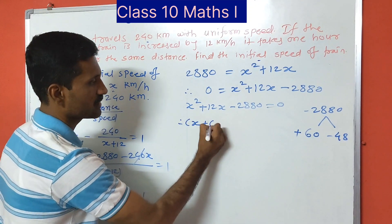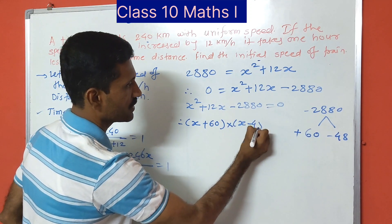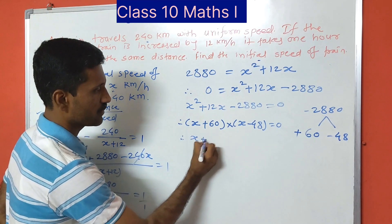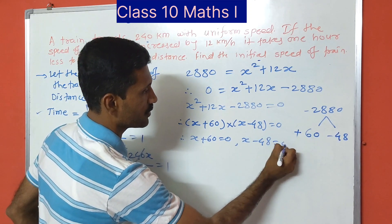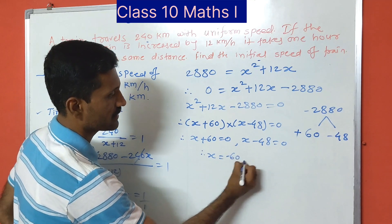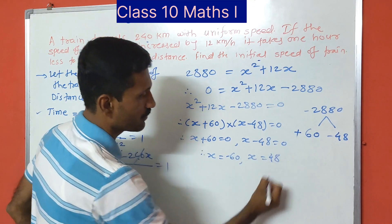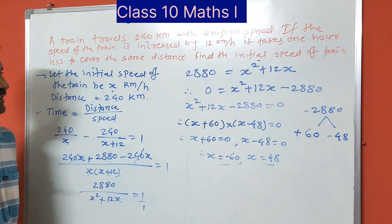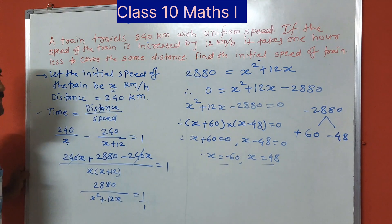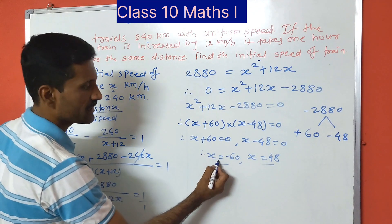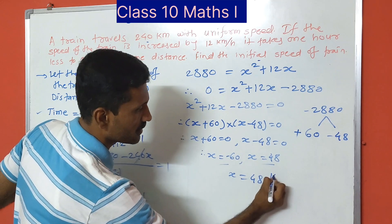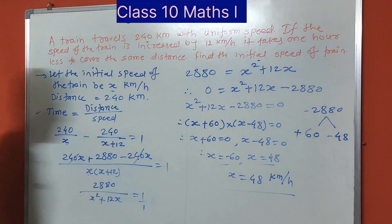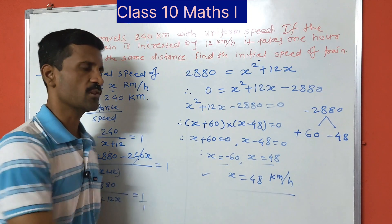So we can write it as x plus 60 times x minus 48 equals 0. Since the product is zero, either x plus 60 equals 0 or x minus 48 equals 0, giving x equals minus 60 or x equals 48. Since x equals minus 60 cannot be the answer because speed cannot be negative, x equals 48 km per hour. So the initial speed of the train is 48 kilometers per hour.